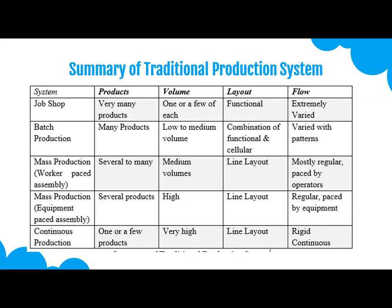Now for a summary of traditional production systems. Up till now, in previous videos, we have seen job shop production, batch production, mass production — both worker-paced assembly and equipment-paced assembly — and continuous production. We will now compare each system in terms of product volume, layout, and flow.